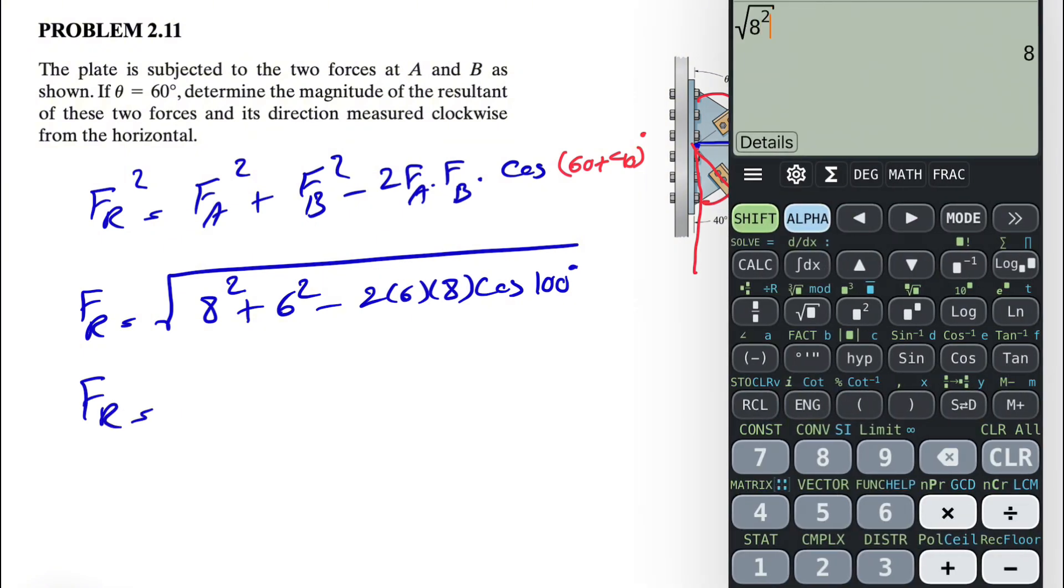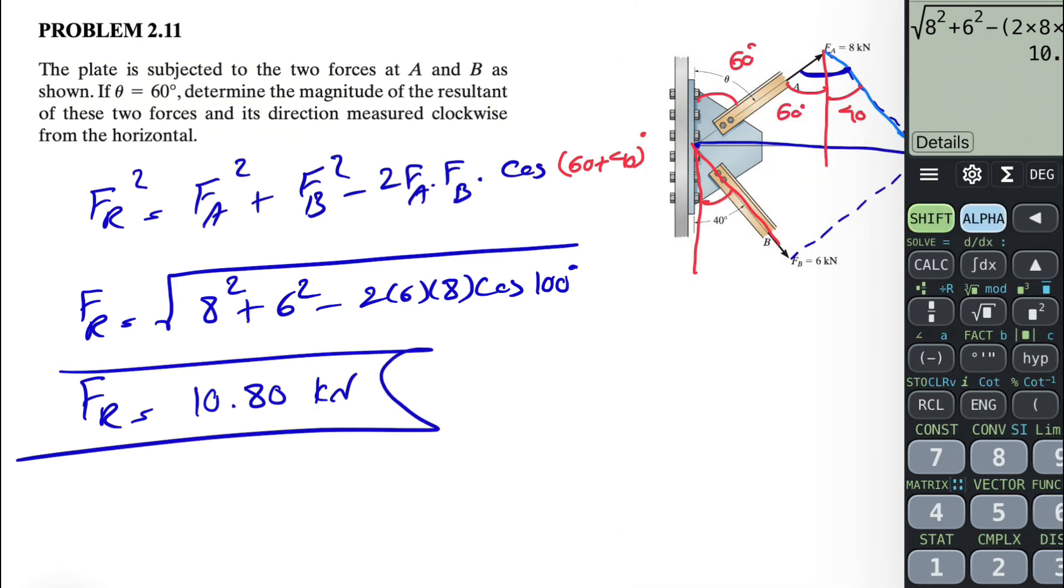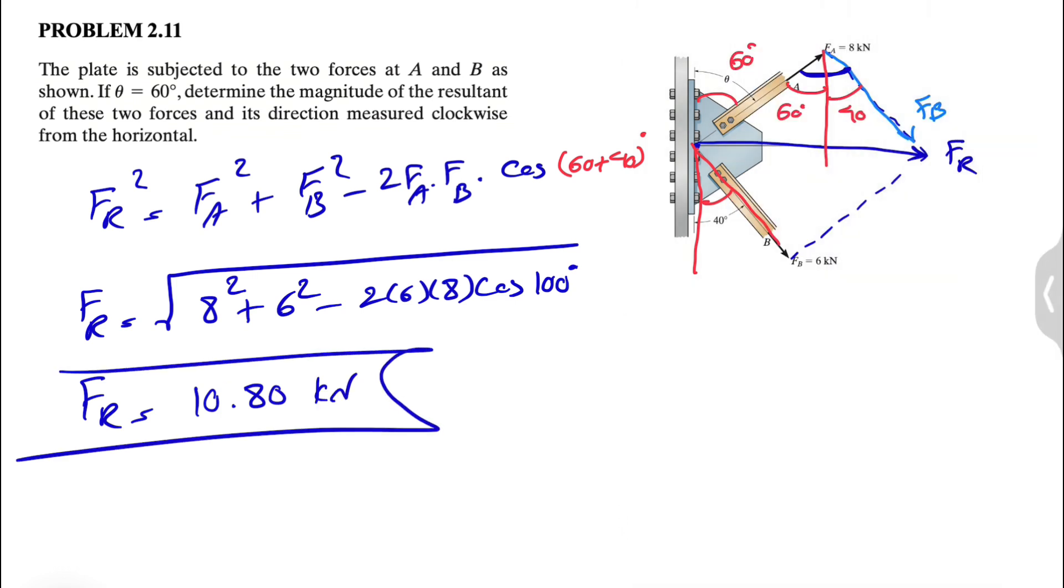So basically we have a square root of 8 squared plus 6 squared minus 2 times 8 times 6 times cosine of 100 degrees. And that's going to give us 10.80 kilonewtons. So we found the first part of the question where we needed to find the magnitude of the resultant.